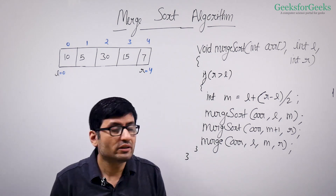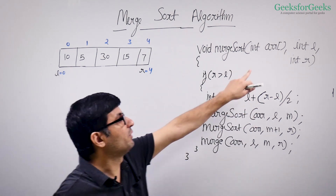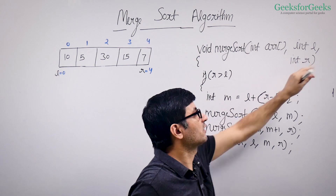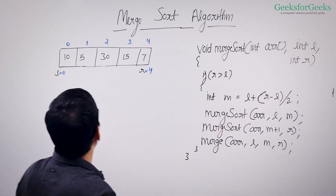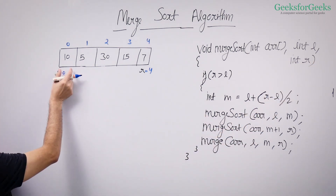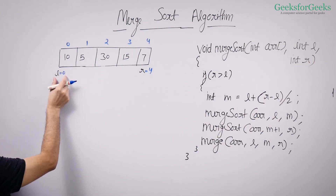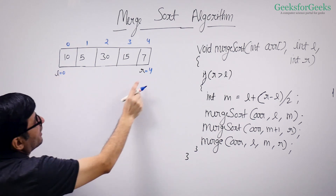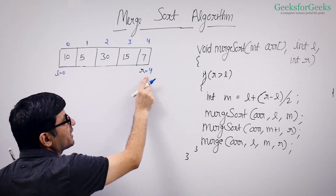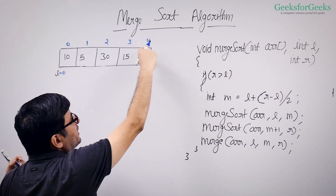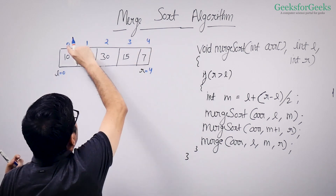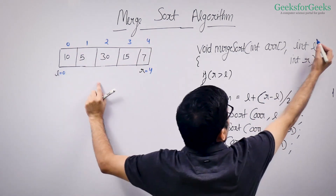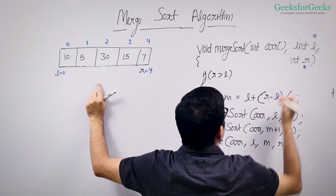We take an input array and we also take two indexes L and R. L is the first index of this array. If your array is 0-based, it's going to be 0. R is the last index of your array. So for an array with indices 0, 1, 2, 3, 4, L is going to be 0 and R is going to be 4.